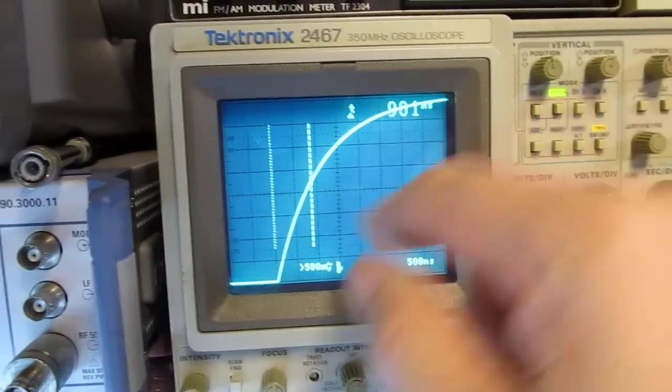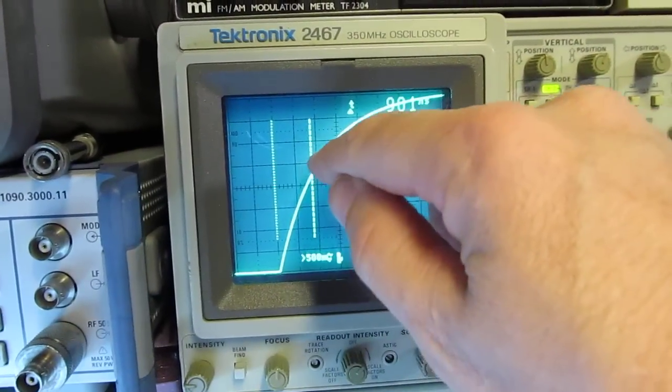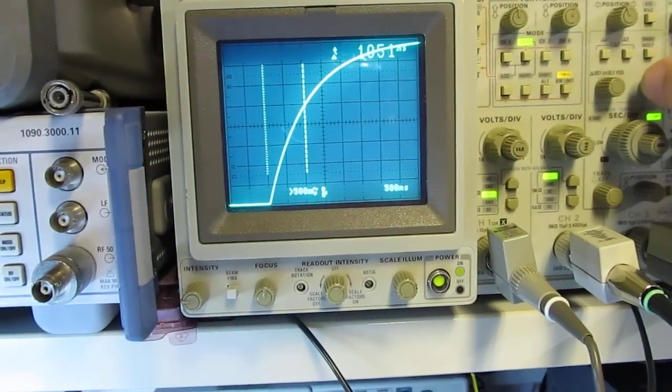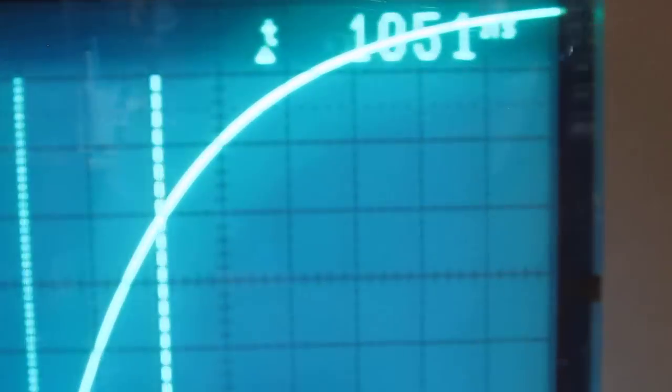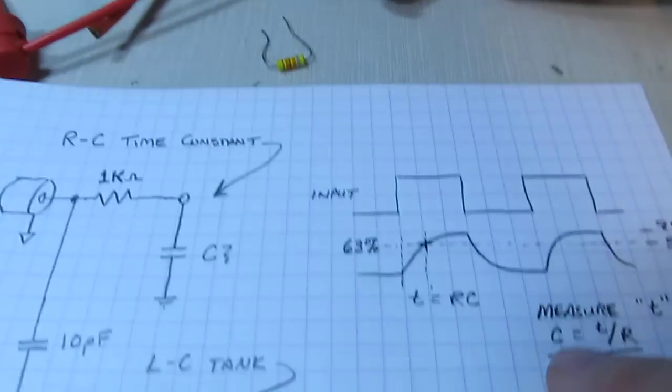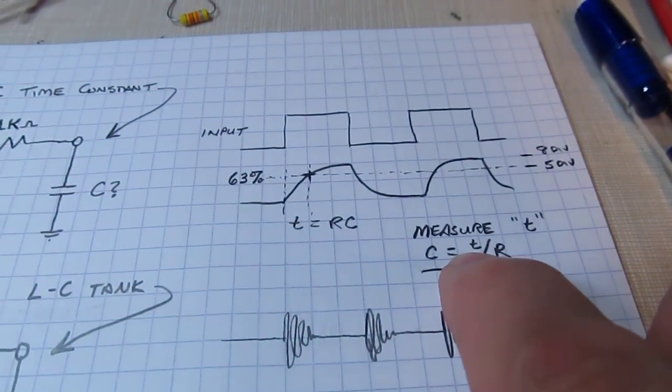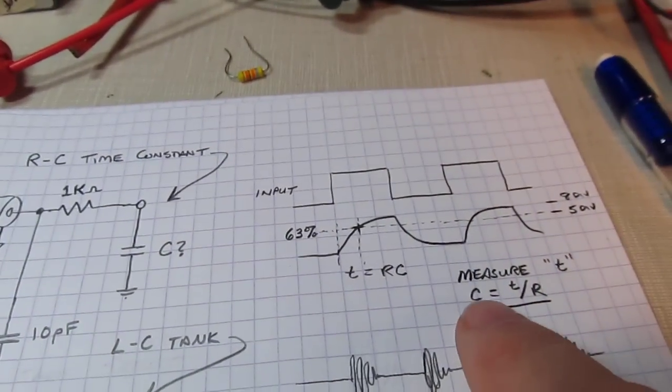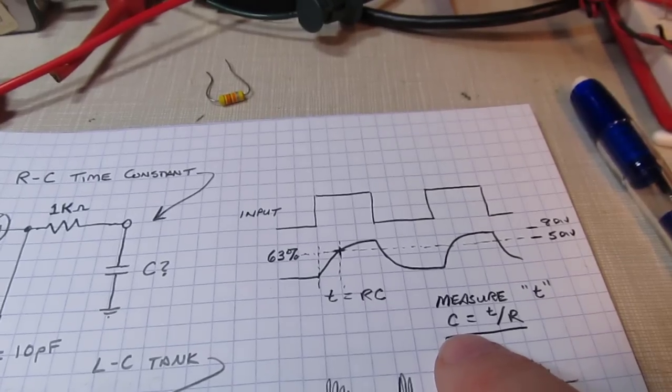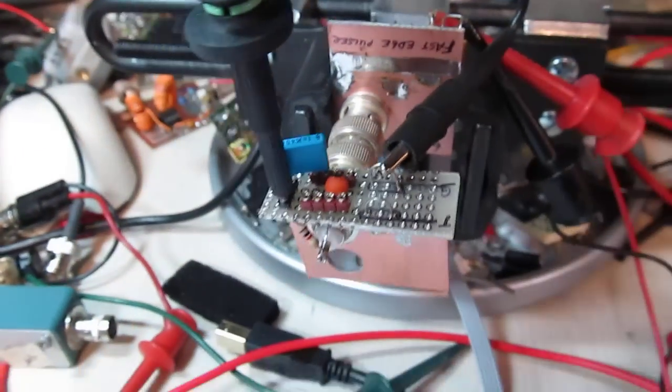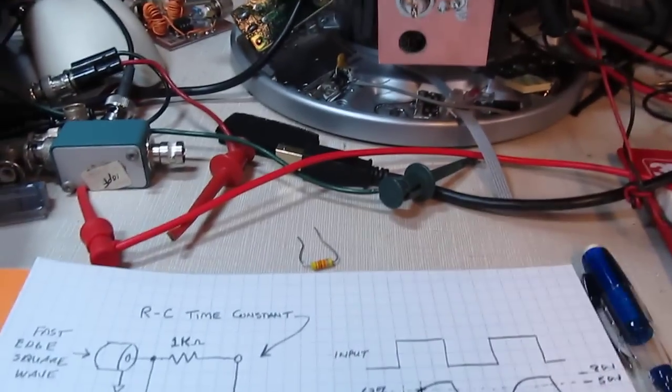I'll put my Delta T cursors on here and adjust one of the cursors to be at that graticule where we're starting, and adjust the other one to right where that signal is crossing the fifth division. It looks like that's right about here. If we look at the Delta T there, it looks like just over a microsecond - 1,051 nanoseconds. If I know that that time is a thousand nanoseconds or one microsecond and I know the resistor is one thousand ohms, that means the capacitor is a thousand picofarads or one nanofarad. And that indeed is what it is - we can focus in on that, it says 1n on it. So that's how we measure the capacitors.